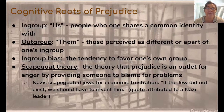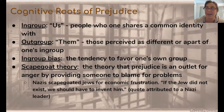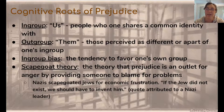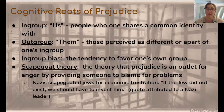In-group bias doesn't have to create deeper prejudice feelings, but it's an influencing factor on those feelings. Another thing that might influence prejudice cognitively is scapegoat theory. This is the theory that prejudice exists because it's an outlet for anger by giving someone something to blame for their problems.